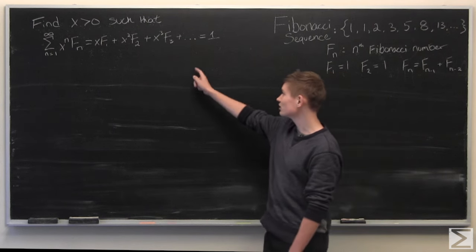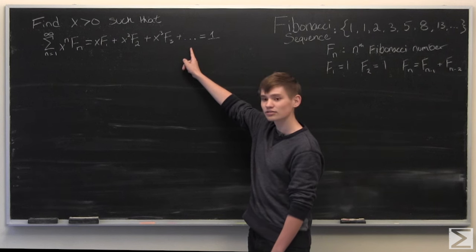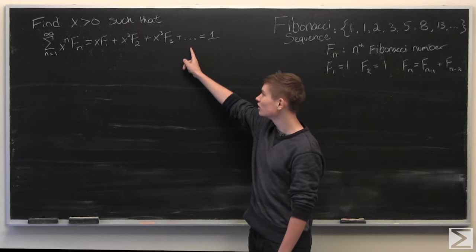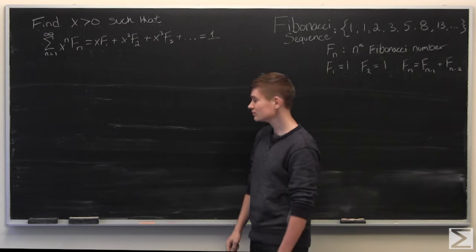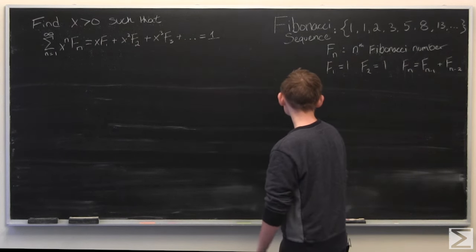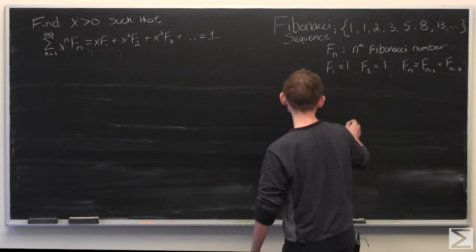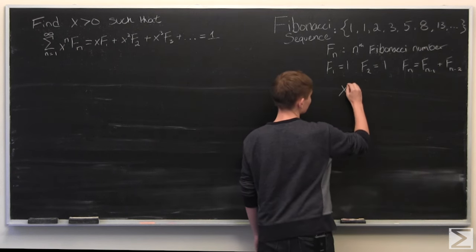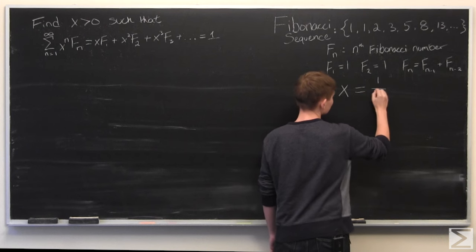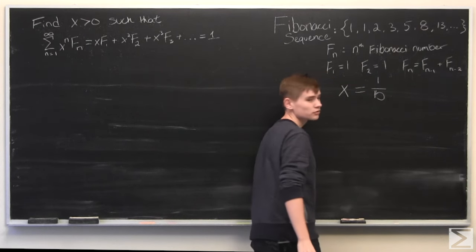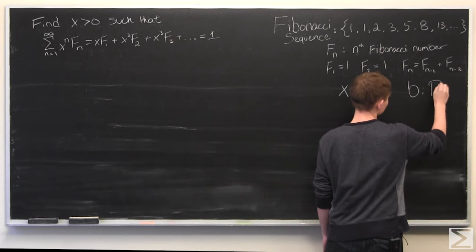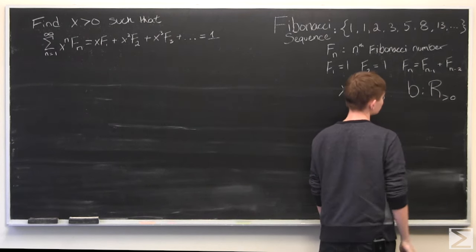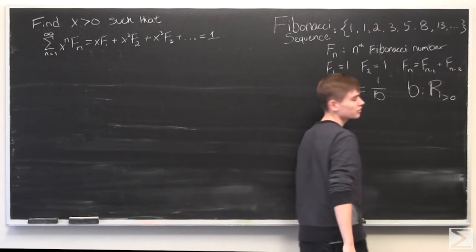And if we want to make this converge to a finite answer, we are going to need to have an x less than 1, intuitively. And so, we can make x equal to 1 over b, where b is a real number greater than 0.